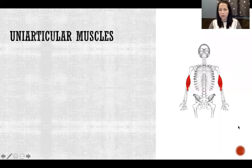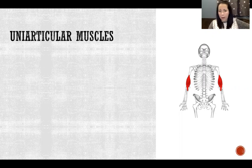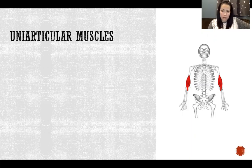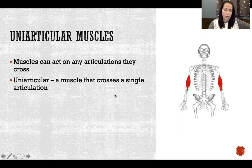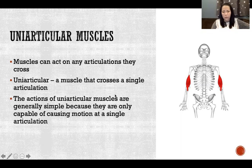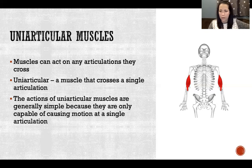A uniarticular muscle is a muscle that only crosses one joint, therefore it only acts on one joint. Muscles only act on the joints that they cross — so if a muscle does not cross the glenohumeral joint, it has no actions at the glenohumeral joint. The actions of uniarticular muscles are generally simple because they are only capable of causing motion at a single articulation.